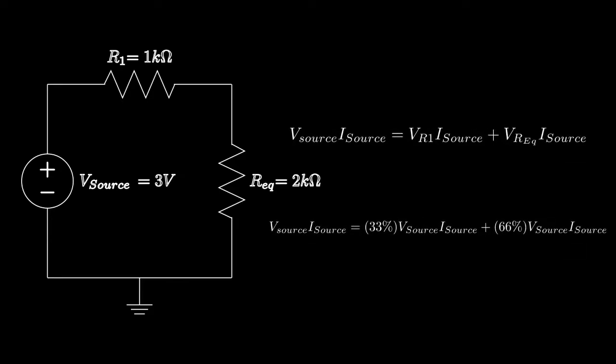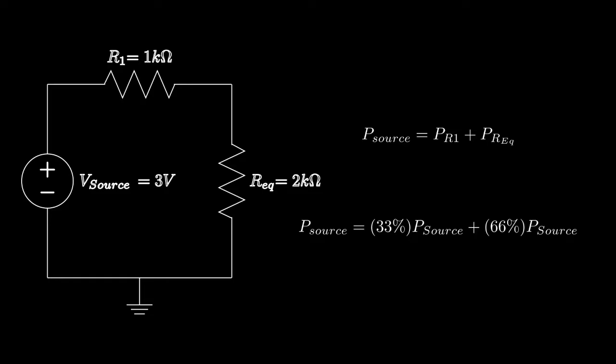Now, multiplying in current, we get a similar equation for power, where we see that not only can we control how much voltage is going to be across each component, we can control where the power is going in our circuit. This is the weighted average interpretation of the voltage divider, where your chosen resistances dictate how much power is distributed to each part of your voltage divider circuit.